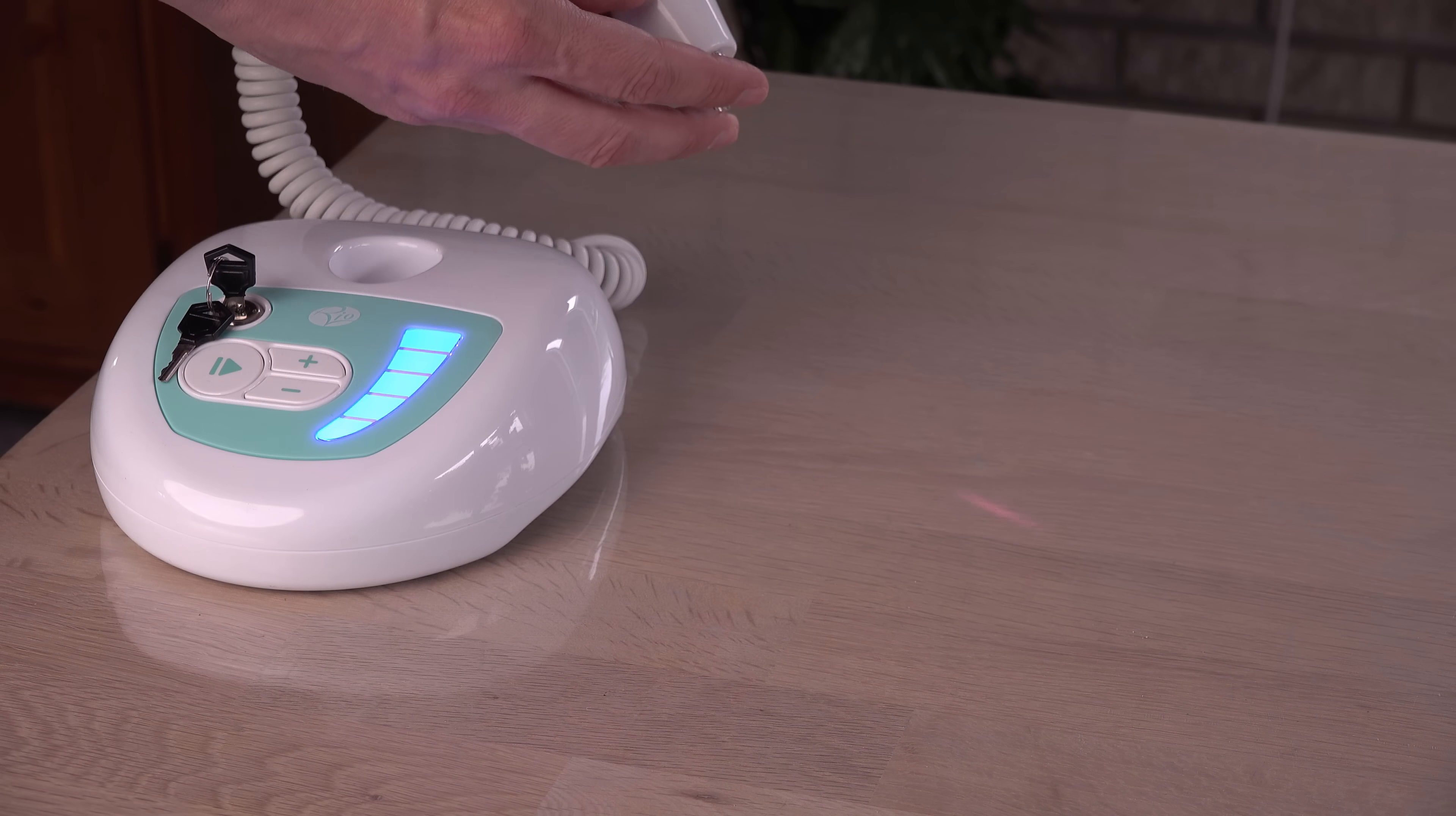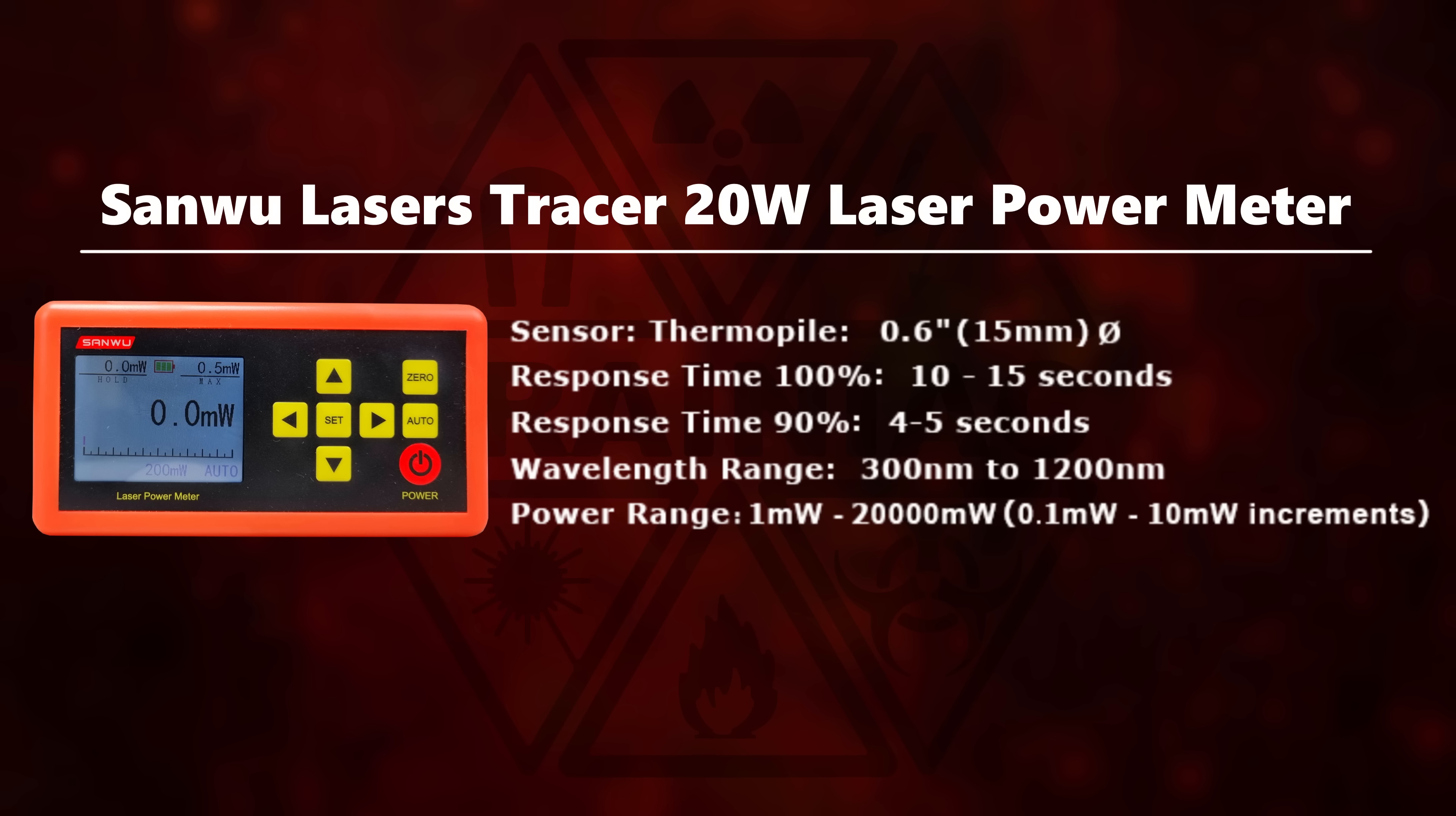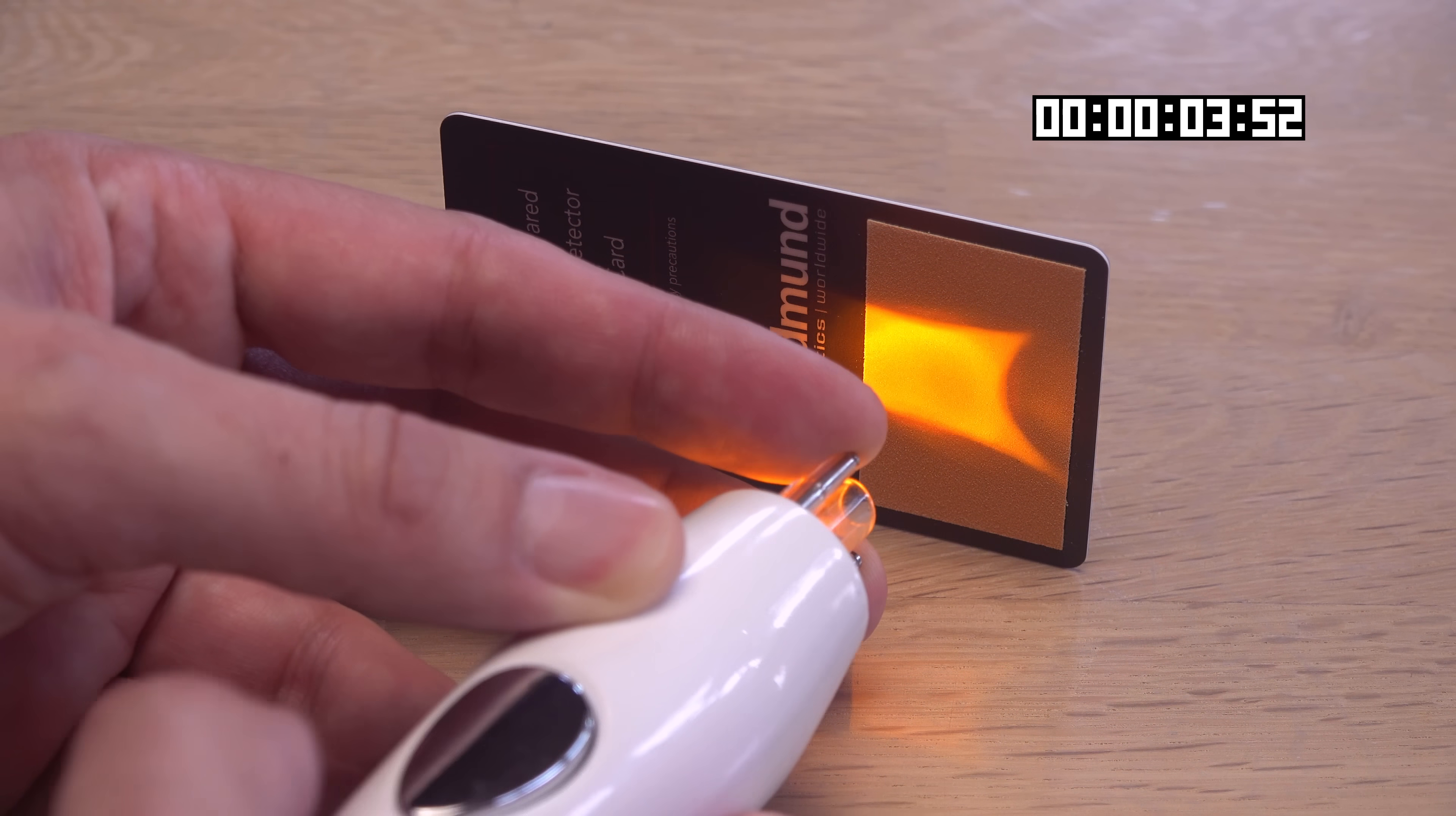Alright. Time to find out how powerful this laser is. There is a small challenge though. Laser power meters work by measuring how much they are heated up by a laser. The model I use needs up to 15 seconds to measure the full strength of the laser beam. But this laser will only run for max 3.5 seconds at the time. So some calculation is needed.